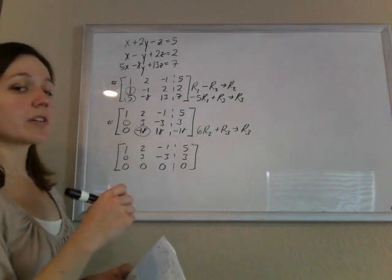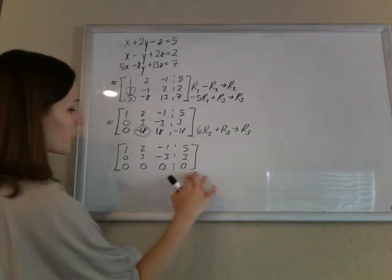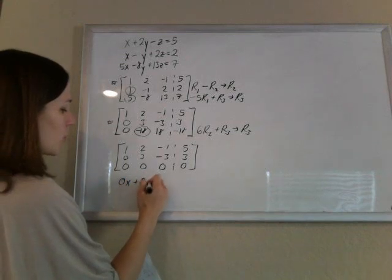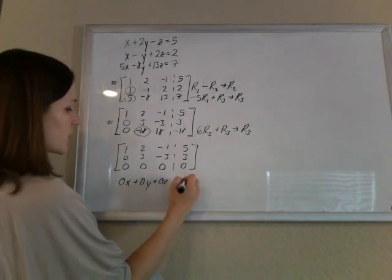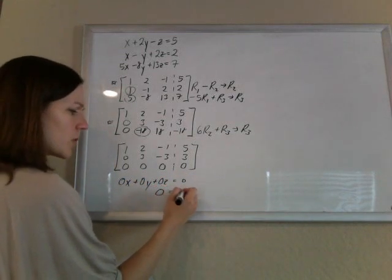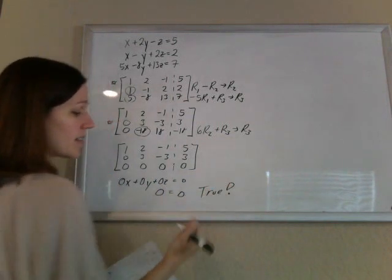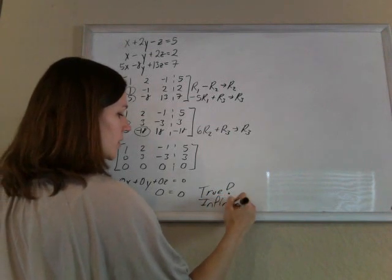Alright, I got more zeros than I planned. I've got a whole row of zeros. This translates to 0x plus 0y plus 0z equals 0, which means that 0 equals 0, which is strange, but true. And this is the case where there are an infinite number of solutions.